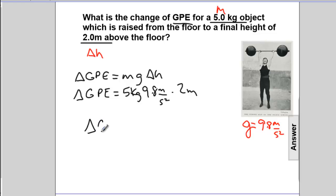The change in gravitational potential energy is about 100 kg meters squared per second squared, which is equivalent to about 100 joules.